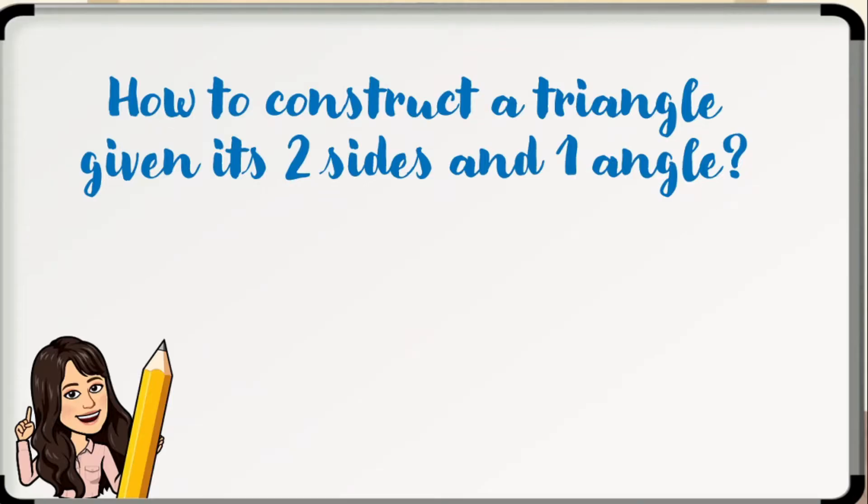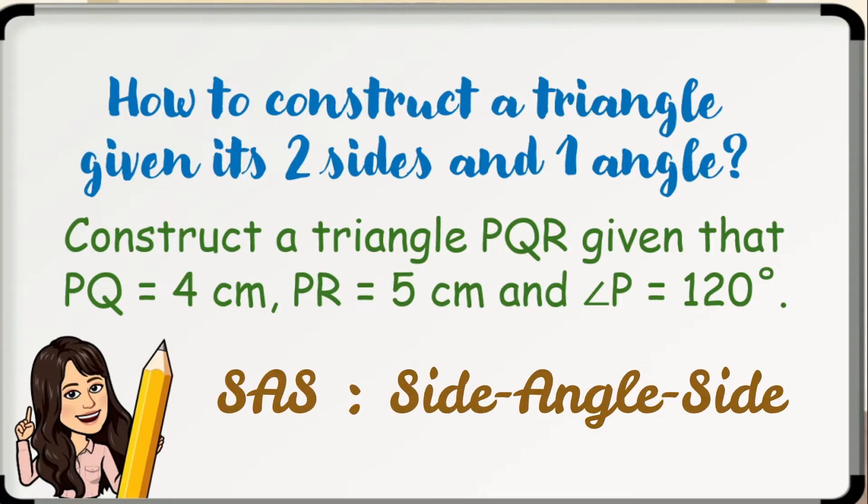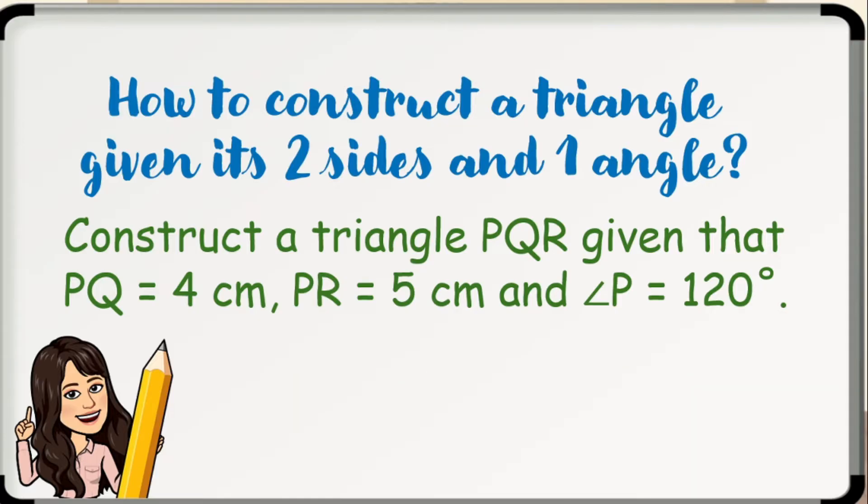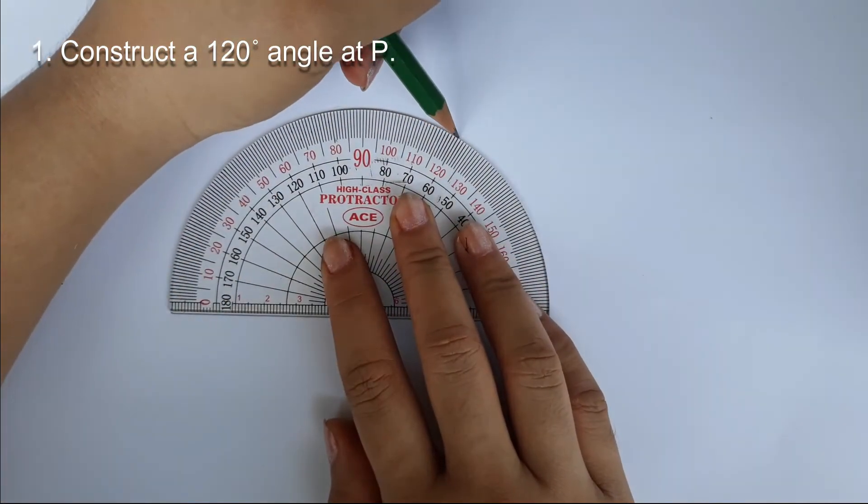How to construct a triangle given its two sides and one angle? In this lesson, we will learn how to construct a triangle given two sides and an angle between them or the SAS, side angle side. In order for the triangle to be unique, the angle given must be between the two given sides. So now our task is to construct a triangle PQR given that PQ is equal to 4 centimeters, PR is equal to 5 centimeters, and angle P is equal to 120 degrees. Here are the steps. Step 1. We construct a 120-degree angle at P.